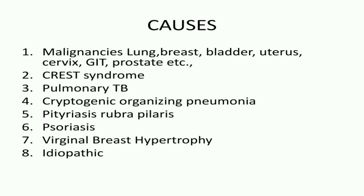The causes of Erythema Chiratum Ripens are: 1. Malignancies. The most common malignancy reported to cause this is lung cancer. The others are breast cancer, bladder cancer, uterus, cervix, GI, and prostatic malignancies.